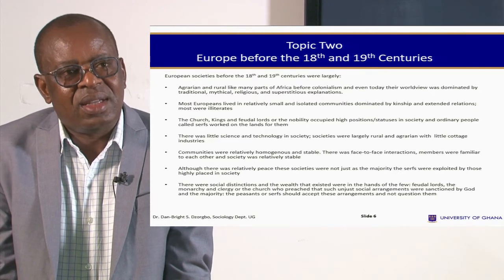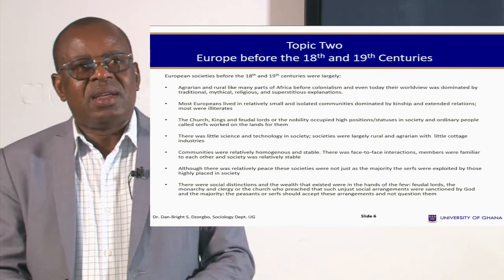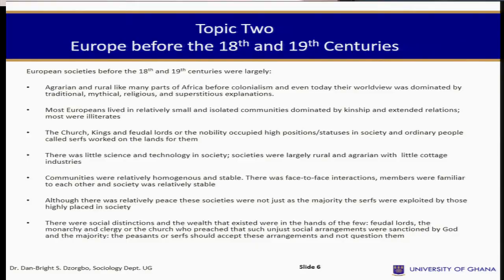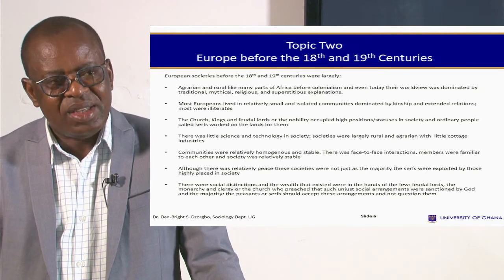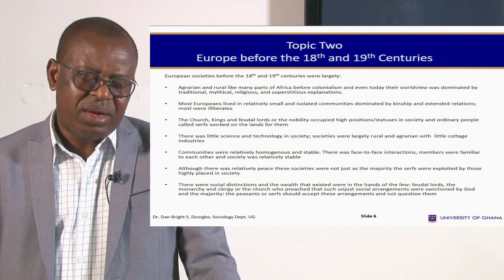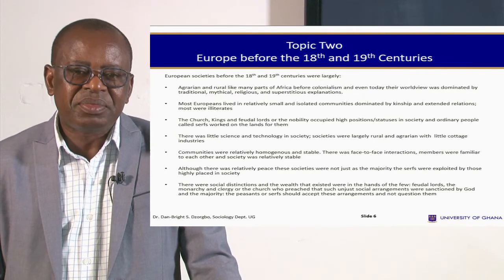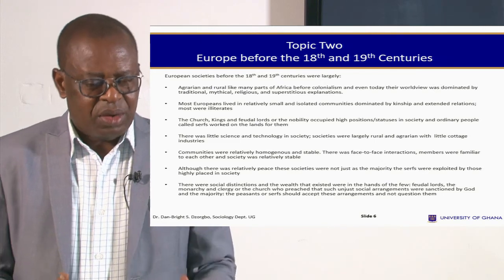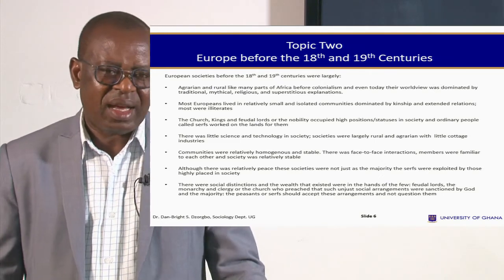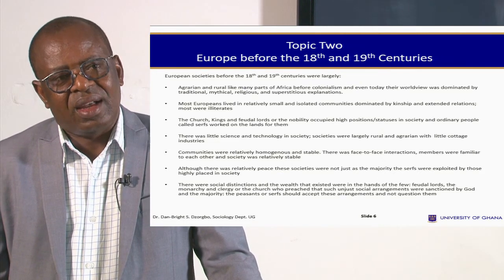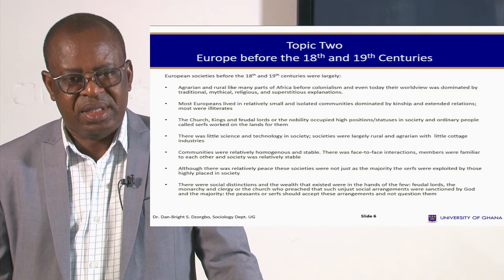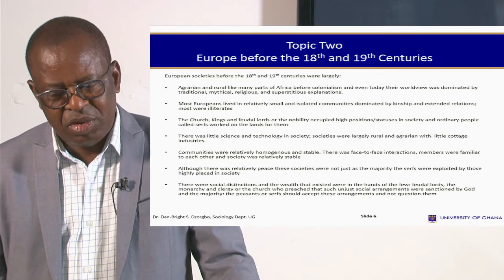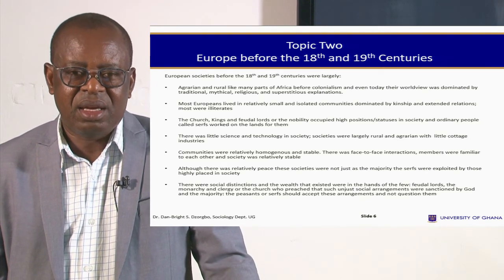The system of feudalism operated this way: the feudal lords owned most of the lands, the church also was in existence along with the kings or the monarchy, and the rest of the people had to work for them. There was a kind of social distinction — we can say social class. In spite of this social distinction, communities were relatively peaceful and stable, with face-to-face interaction, just like many African societies.